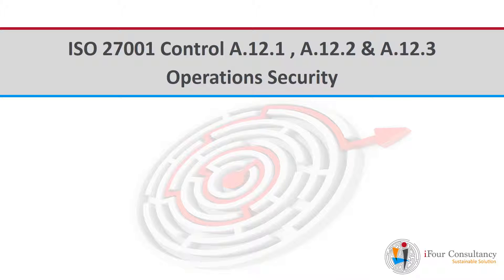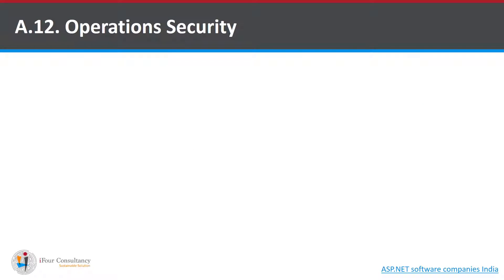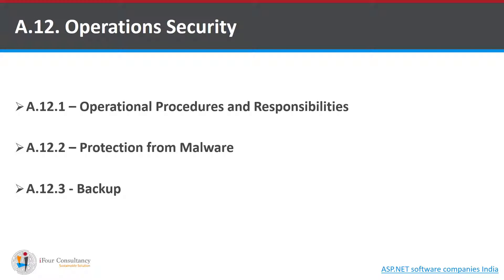Hello everyone. In this video we are going to talk about A12, that is Operation Security of ISO/IEC 27001. Operation security is divided into seven categories. The first three categories are going to be covered in this video: the first is Operational Procedures and Responsibilities, the second is Protection from Malware, and the third is Backup.